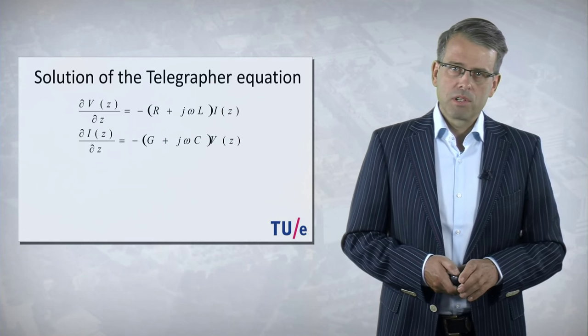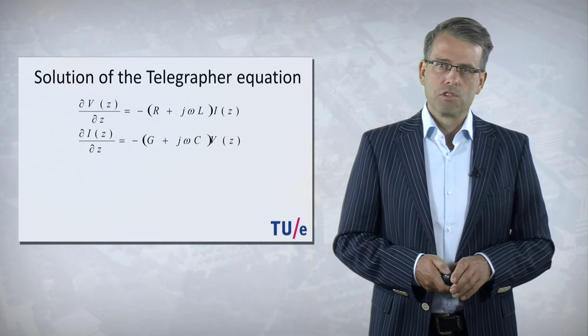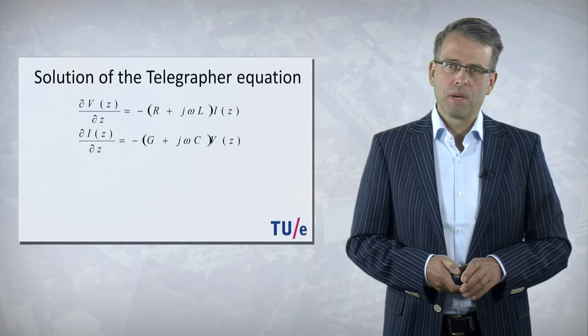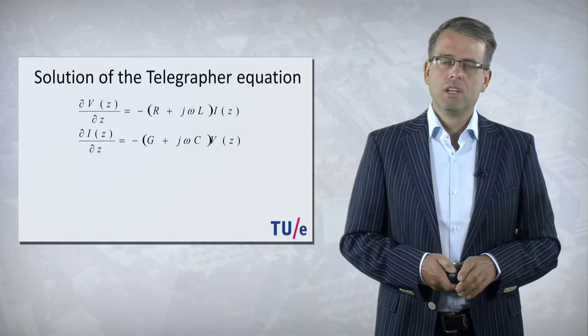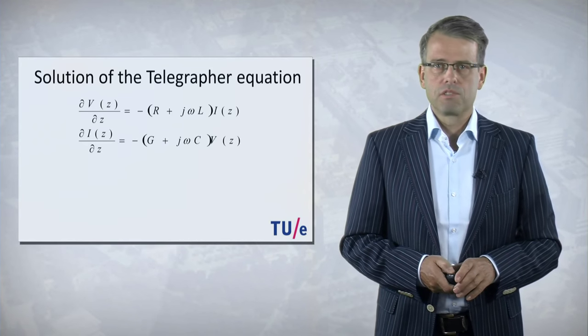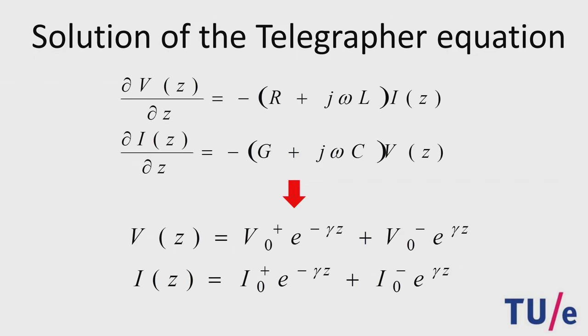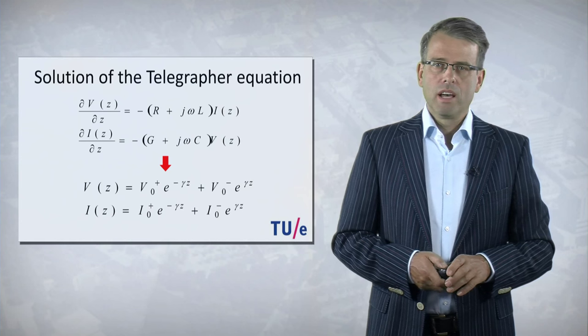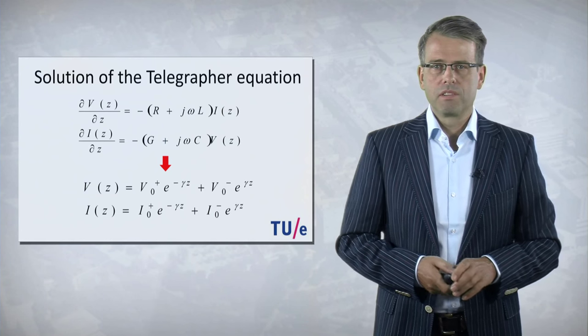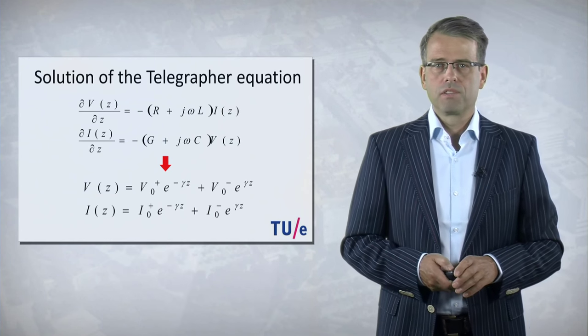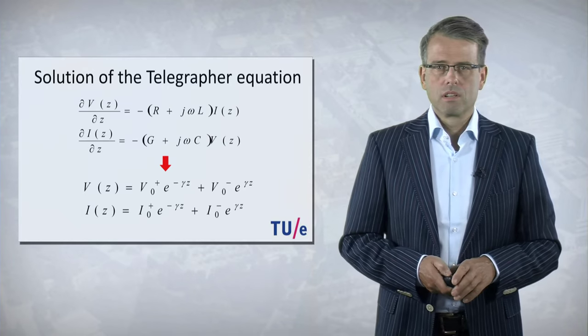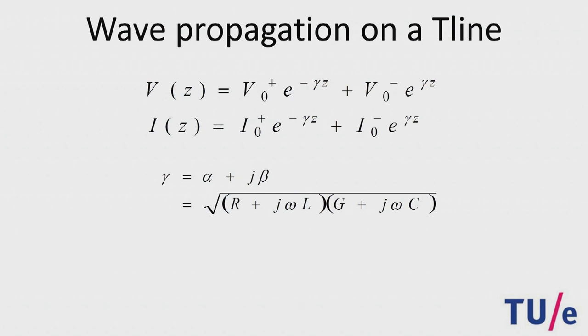So our next step is to look into the telegraph equation and try to find solutions. Well, from the basic courses in mathematics from the bachelor, we know that a general solution of these kind of equations are exponential functions. And indeed we can write the voltage at z in terms of an exponential function related to a wave propagating in the positive z direction with amplitude V plus and a voltage wave propagating in the minus z direction with amplitude V minus. And for the current we find a similar relation.